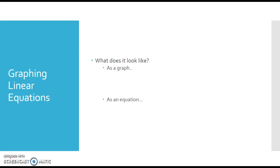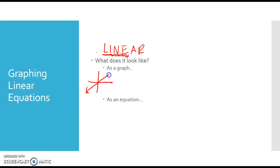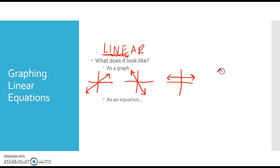So what do they look like? Well, inside the word 'linear,' we've got the word 'line.' So our graph is going to be a straight line. You have the option of having a line go uphill, you could have one go downhill, you could have one go left to right but be flat — that's a horizontal line — or you could have one go up and down, which is called a vertical line.